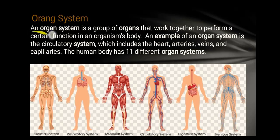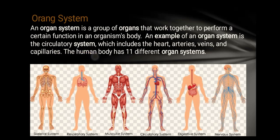An organ system is a group of organs that work together to perform a certain function in an organism's body. An example of an organ system is the circulatory system, which includes the heart, arteries, veins, and capillaries. The human body has 11 different organ systems.